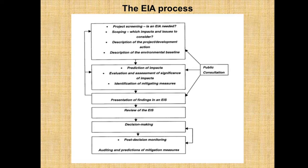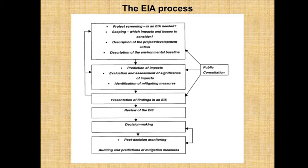Second is scoping — which impacts and issues are to be considered, what is the scope of industries. Next is description of the project and development action. Next is description of the environmental baseline. Next is prediction of impact. Next is evaluation and assessment of significance of impact. Next is identification of mitigation measures — what different measures we can apply to minimize that environmental impact.